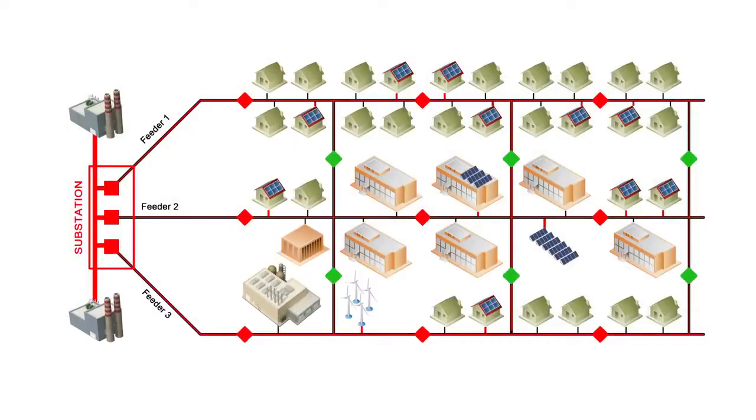FLISSR stands for Fault Locating Isolation and Service Restoration, and it's essentially an acronym for what some might call a self-healing grid, where the system automatically responds to a fault.